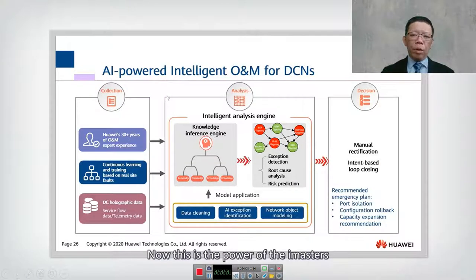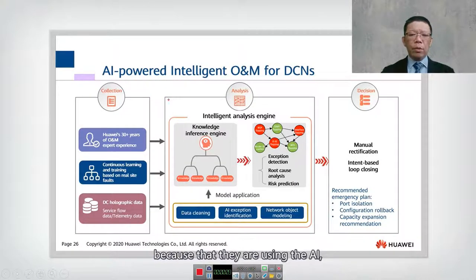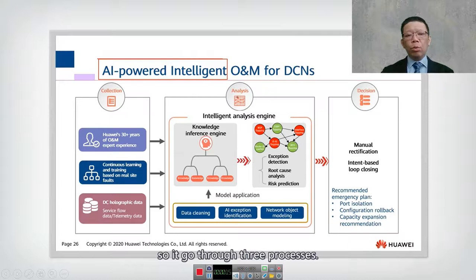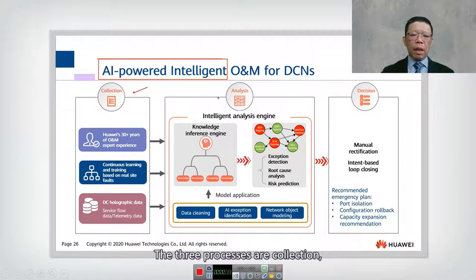This is the power of the iMaster, using AI — AI-powered Intelligent O&M for data center networks. It goes through three processes: collection, analysis, and decision.